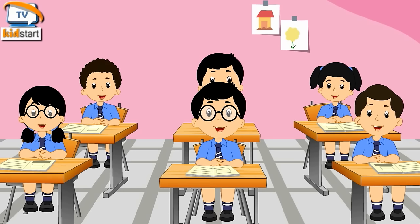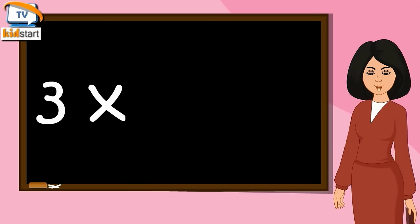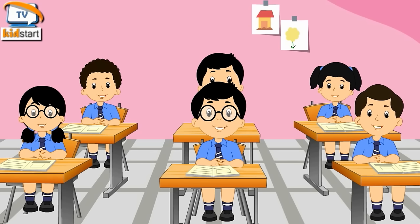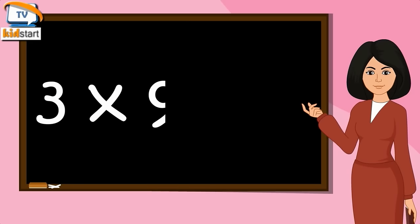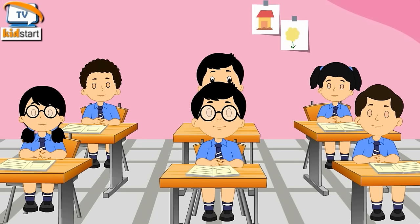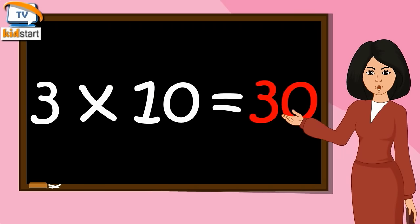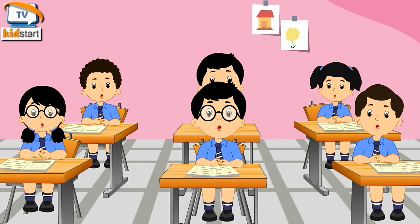Three Sevens are Twenty-One. Three Eights are Twenty-Four. Three Nines are Twenty-Seven. Three Tens are Thirty.